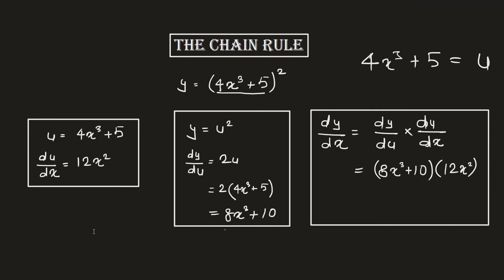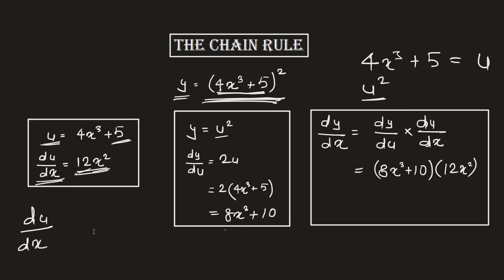If we consider the internal part 4x³ + 5 as u, it becomes very easy to find du/dx. Then we can consider the entire expression as u², making it very easy to do the derivative of y. First we calculate du/dx: since 5 is constant its derivative is 0, giving us 12x². Then considering y = u², dy/du = 2u by the power rule. Substituting the value of u gives us the full expression.